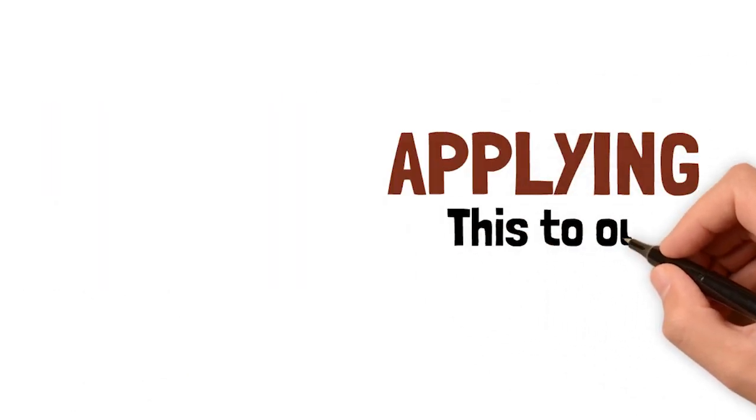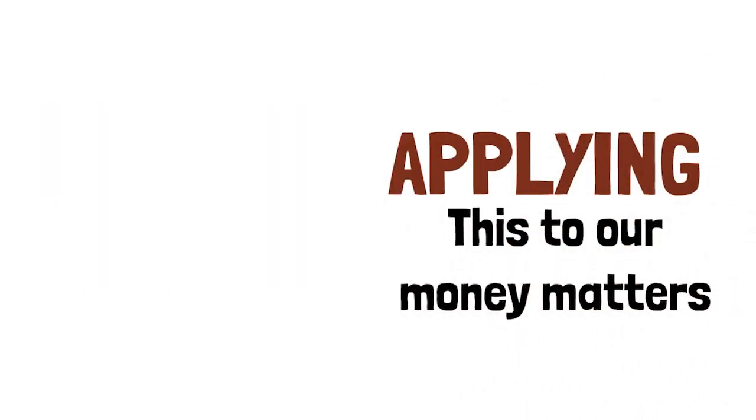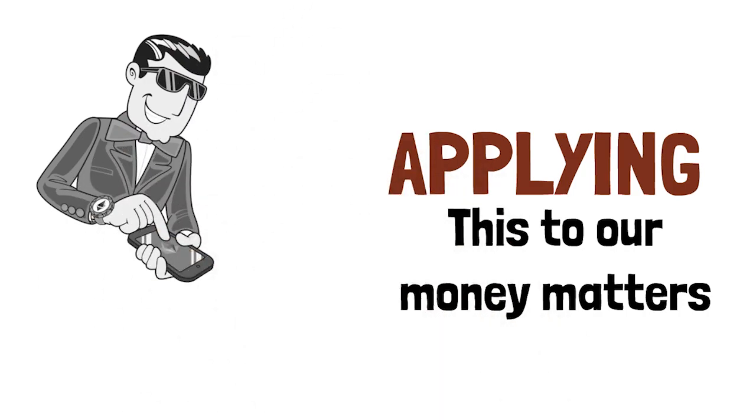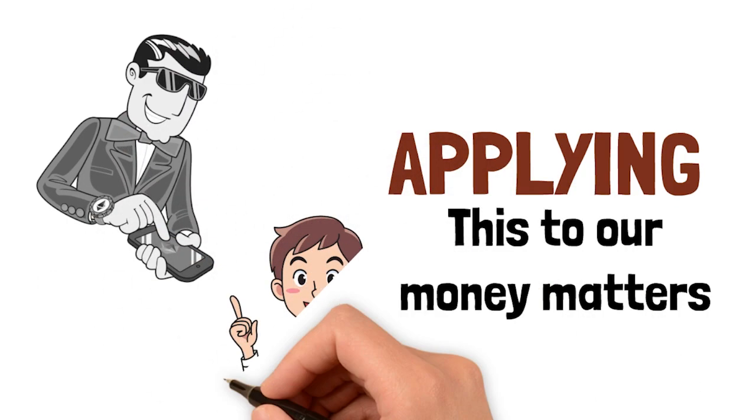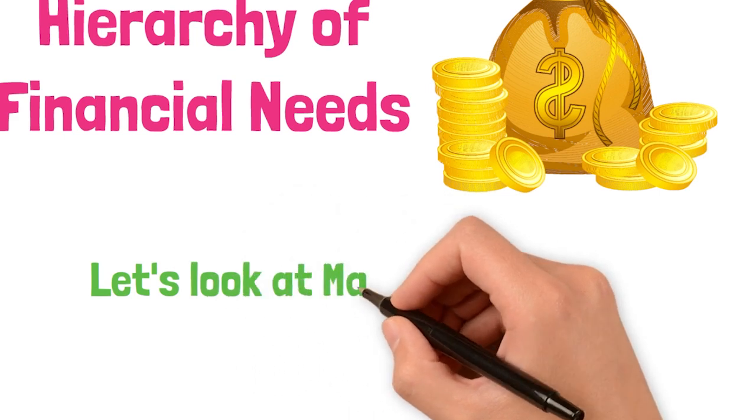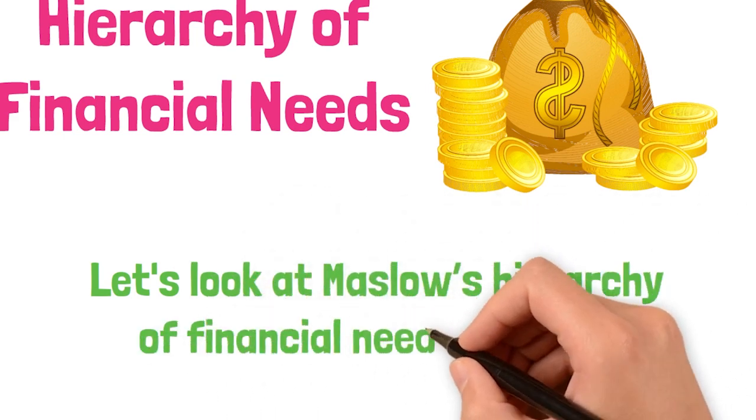Now let's talk about applying this to our money matters. We'll see how we can achieve self-actualization and financial success while considering each level of needs. Let's look at Maslow's hierarchy of financial needs pyramid.